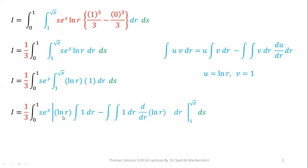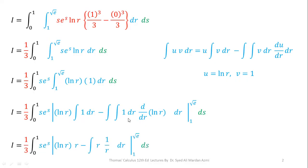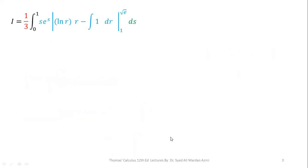Applying the formula of integration by parts with u = natural log of r and v = 1: integration of 1 is r, and the derivative of natural log of r is 1 over r. In the second integral, r and 1/r cancel each other out. We have natural log of r times r minus the integral of 1 dr. Performing the integration gives r·natural log of r minus r, evaluated at limits 1 to square root of e.